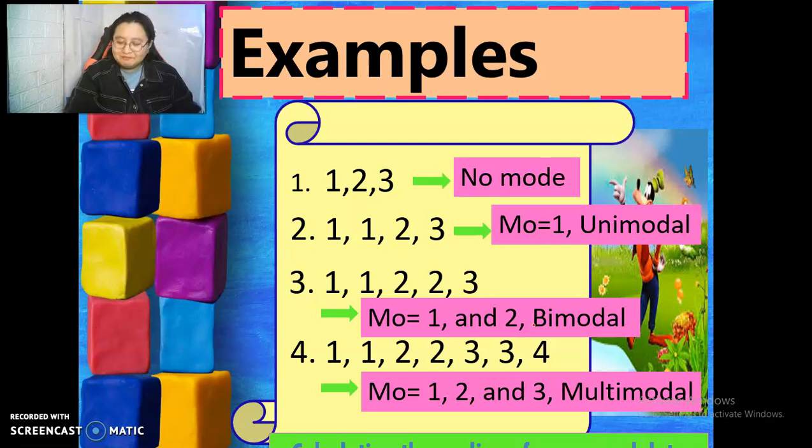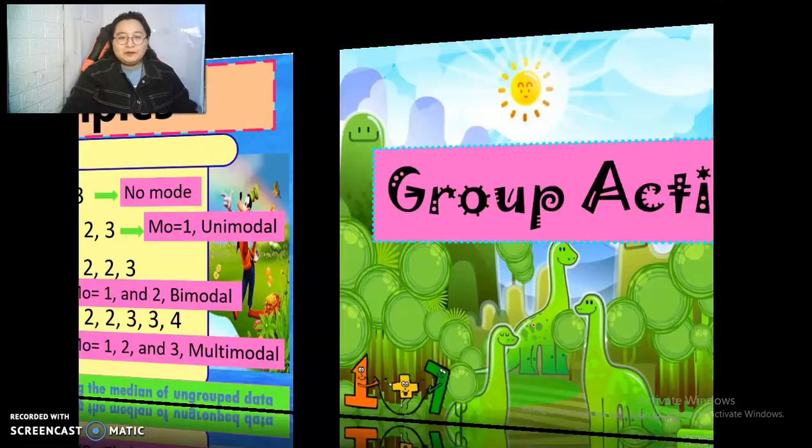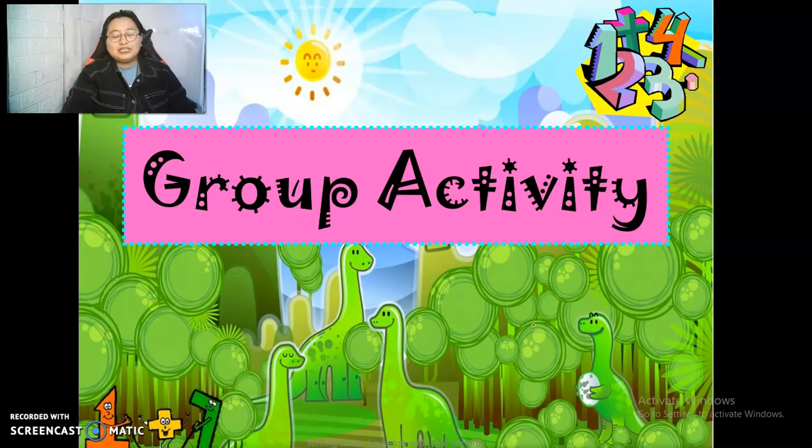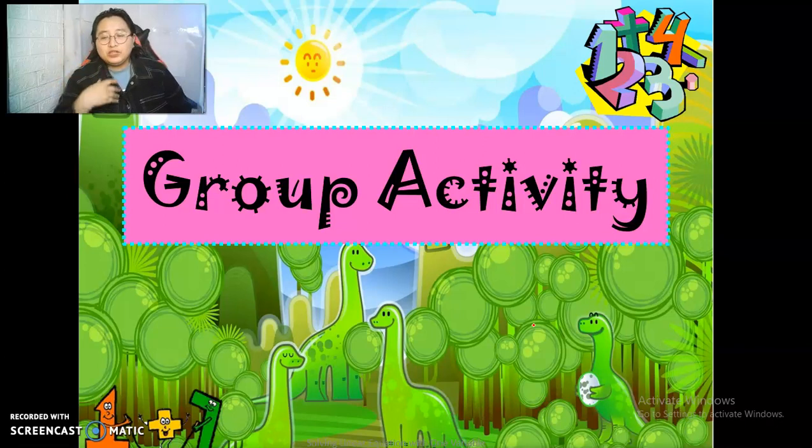Do you have any questions regarding the three measures of central tendency? That's great. Before we have our group activity, let's have first. Tell me first. What do you mean by mean? Yes, Carol. Mean is the sum of all data points divided by the number of data points. Very good. That's correct.